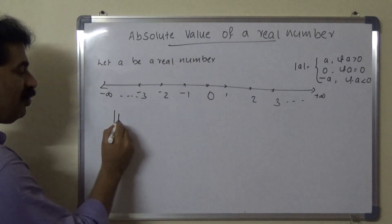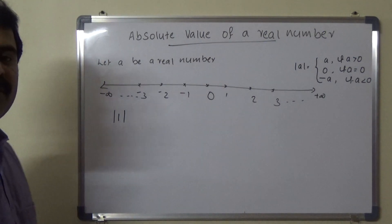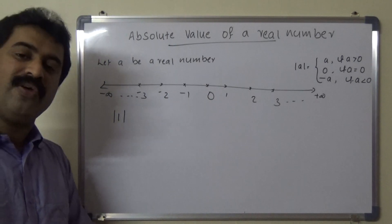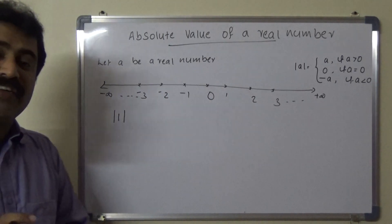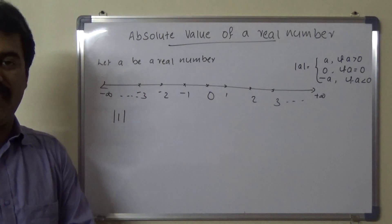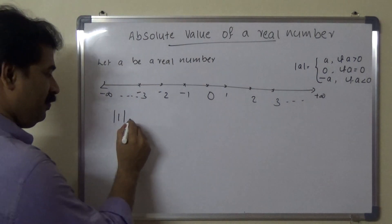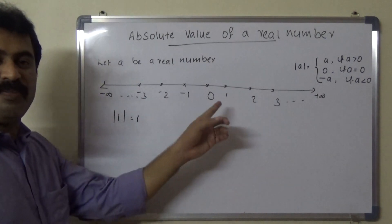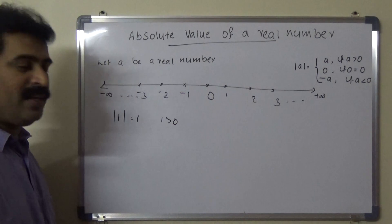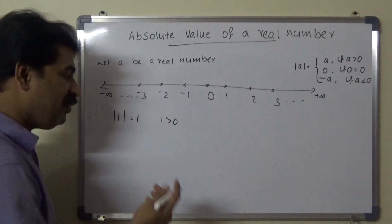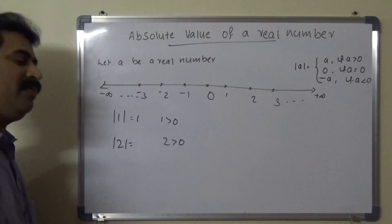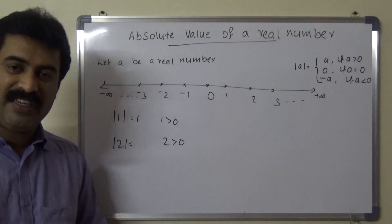What is the absolute value of 1 geometrically? The absolute value of 1 is the distance between 0 and 1, that is, the distance between the origin and 1, which equals 1. Here, 1 is a positive real number.